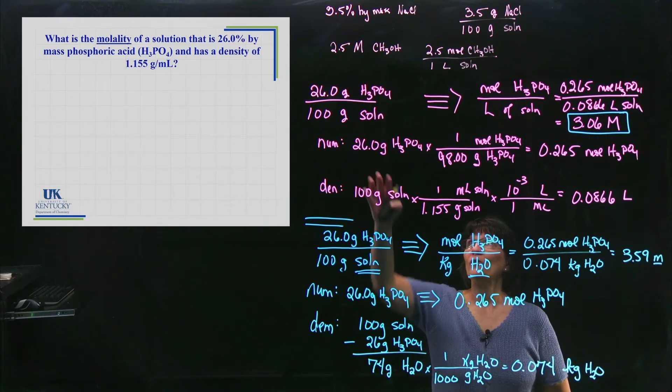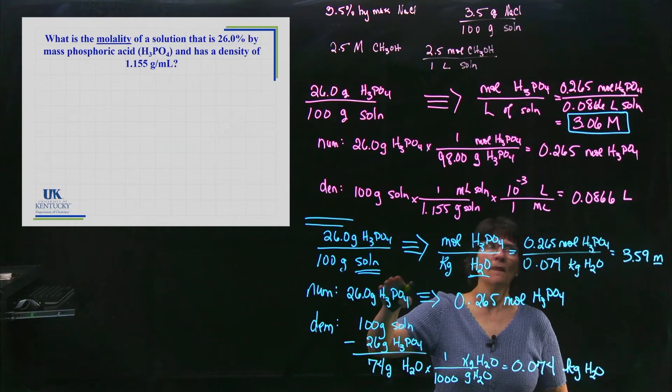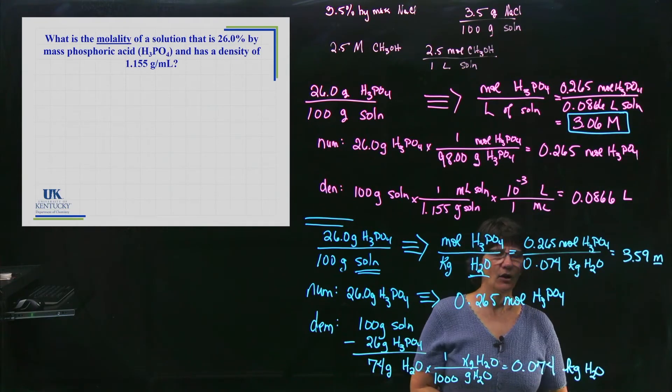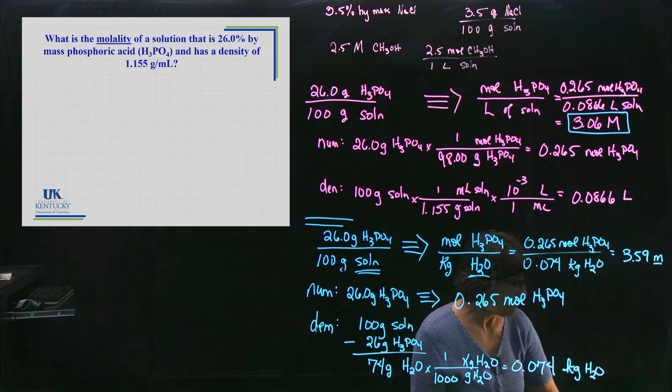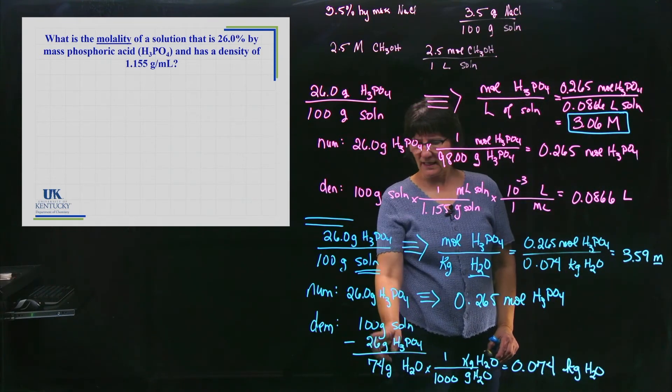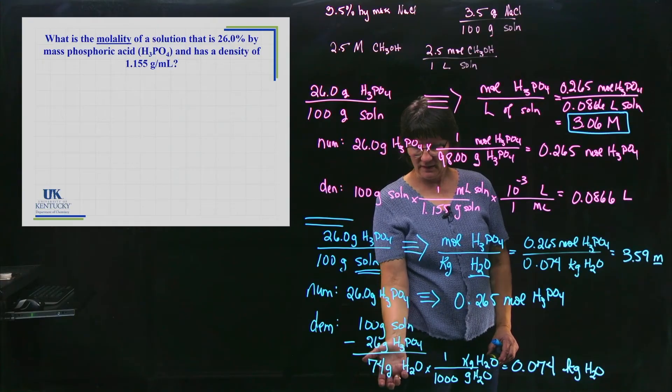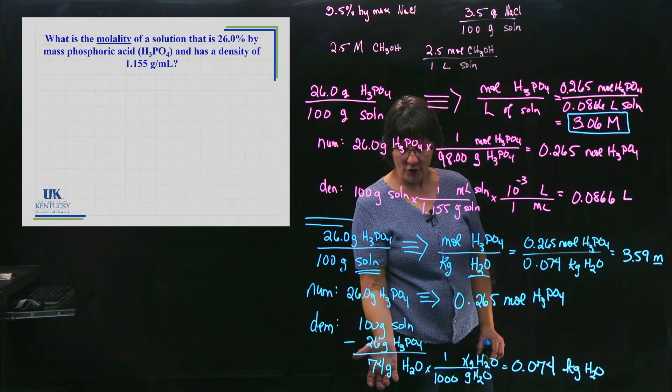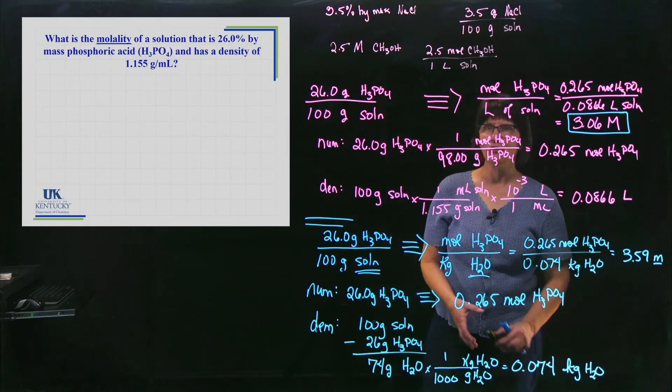So starting with the same percent, the molarity and the molality are not the same. They might be the same. If the solution is really, really dilute, then you're subtracting out such a small number that the kilograms of the water are about the same as the liters of the solution.